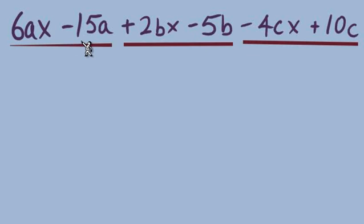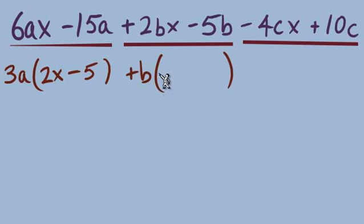Now our approach is still the same with each group. I'm looking for a GCF from this first pair looks like 3a and that will leave us with 2x minus 5. From this middle pair no numbers from the coefficients but a b at least we can bring out front that will leave us with 2x minus 5. So so far so good we have a match with the 2x minus 5. We'll definitely need to see another 2x minus 5 show up here.